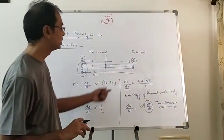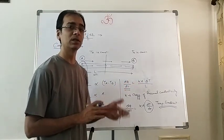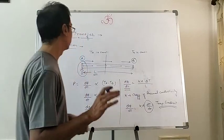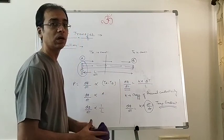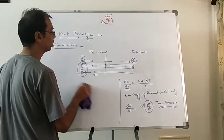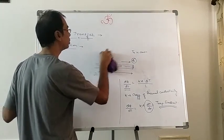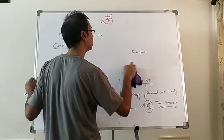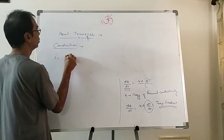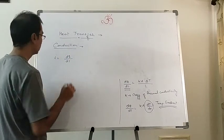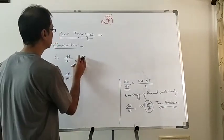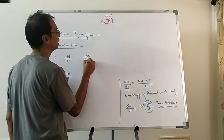Now we can compare this thermal conduction with electrical conduction. In electrical conduction, dQ/dt is the rate of flow of charge — we call that electric current. In thermal conduction, dQ/dt we call heat current. So: electric current I = dQ/dt, and heat current I_h = dQ/dt. Let's compare both.